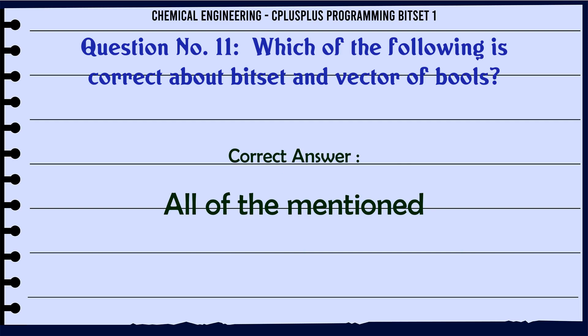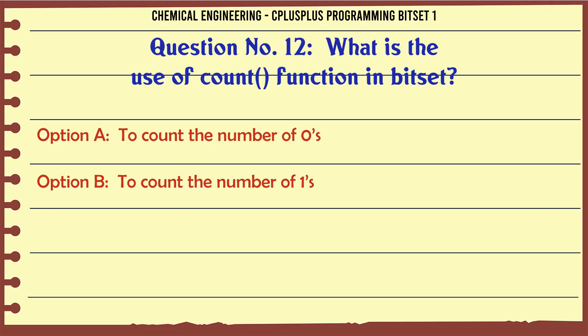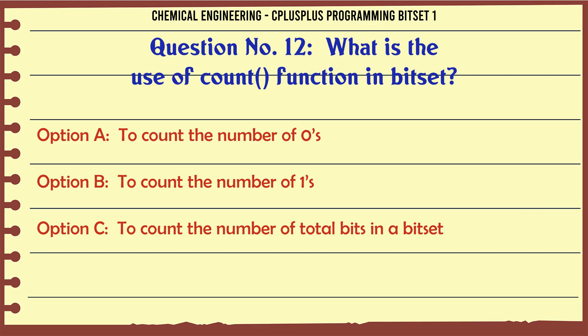What is the use of the count() function in bitset? A. To count the number of 0s. B. To count the number of 1s. C. To count the number of total bits in a bitset. D. To count the number of low bits. The correct answer is to count the number of 1s.